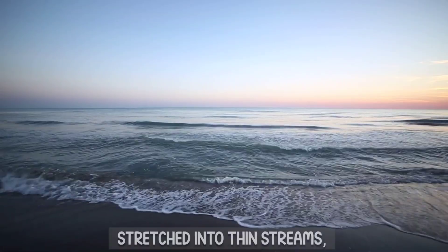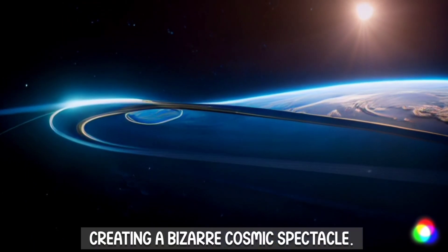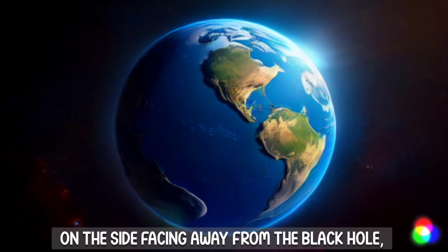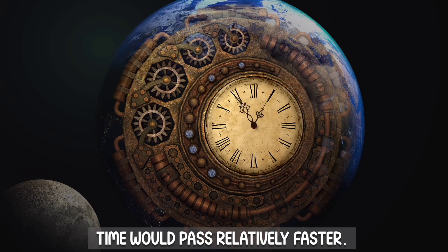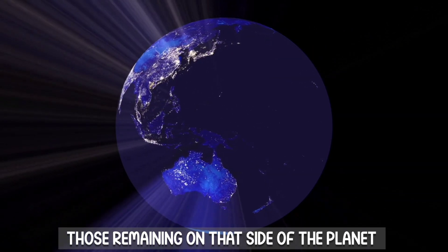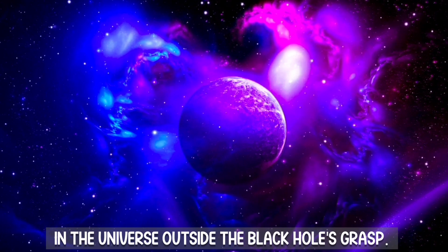In the process, Earth's once blue oceans would be stretched into thin streams, creating a bizarre cosmic spectacle. Meanwhile, on the side facing away from the black hole, time would pass relatively faster. Those remaining on that side of the planet would witness events unfolding rapidly in the universe outside the black hole's grasp.